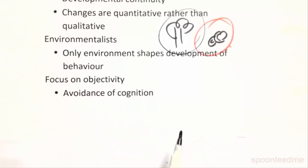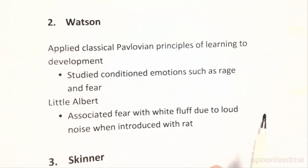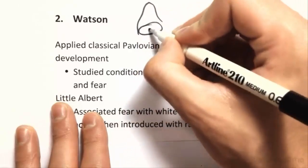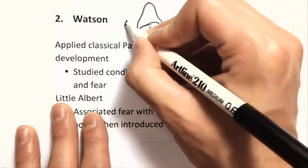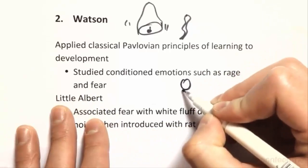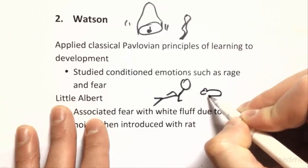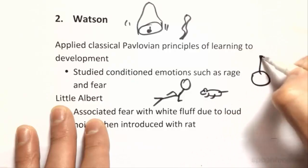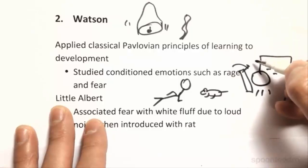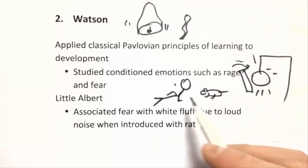Everything is very objective and you don't even talk about cognition because we can't directly study it. Watson applied the classic Pavlovian stuff for learning — Pavlov was the guy with bells who conditioned dogs to salivate when a bell rang. Watson took that and applied it to a baby called Little Albert, giving him a little fluffy white rat which he really liked. Then Watson made a massive loud noise which scared Albert, and because the rat was introduced every time, Albert got scared of the rat.